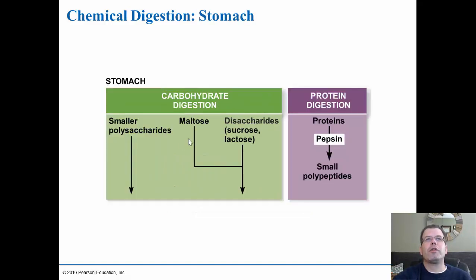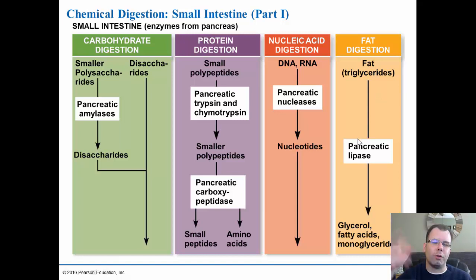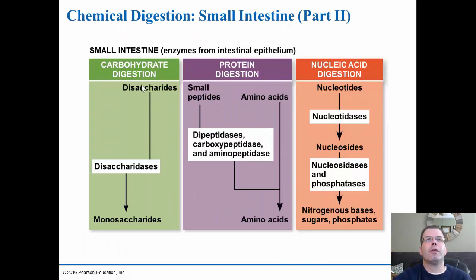In the stomach, carbohydrate digestion continues with additional enzymes, and protein digestion begins with pepsin aided by acid. Moving into the small intestine, the rest of the nutrients are broken down: carbohydrates are further digested by pancreatic amylases; proteins by trypsin and chymotrypsin; nucleic acids by nucleases from the pancreas; and fats by pancreatic lipase along with bile. The main site of chemical digestion is the intestines, though the stomach and mouth start carbohydrate and protein digestion first.